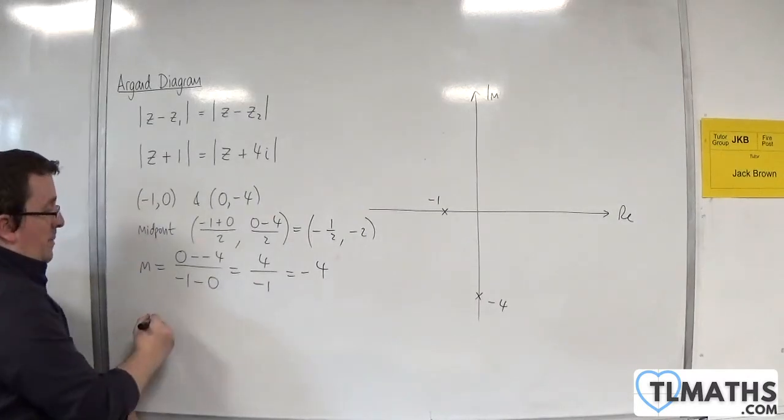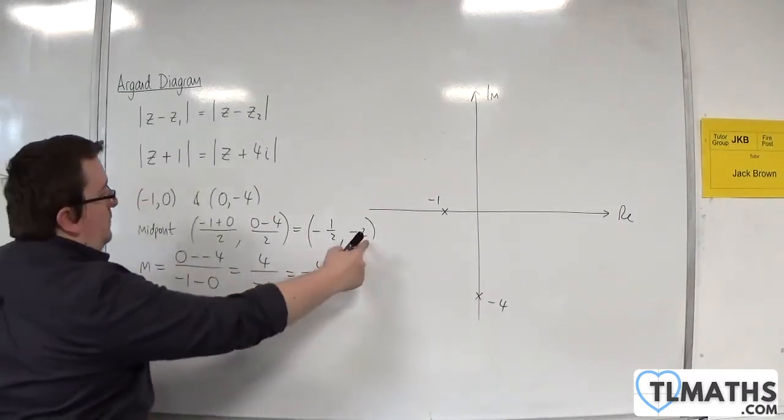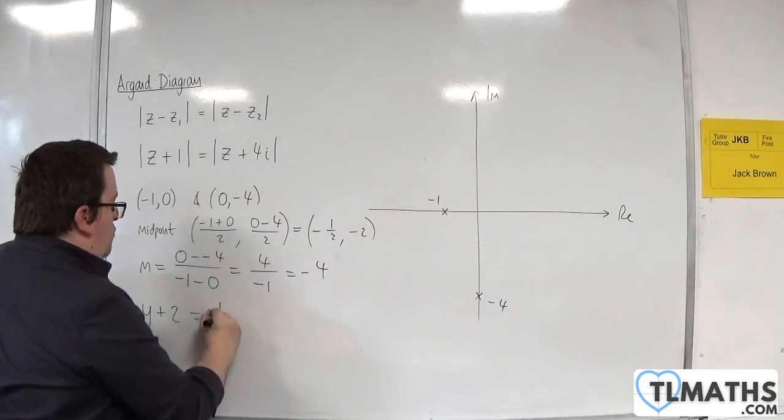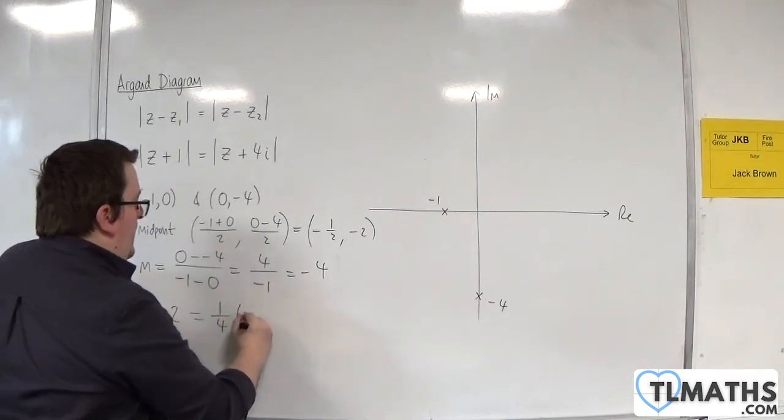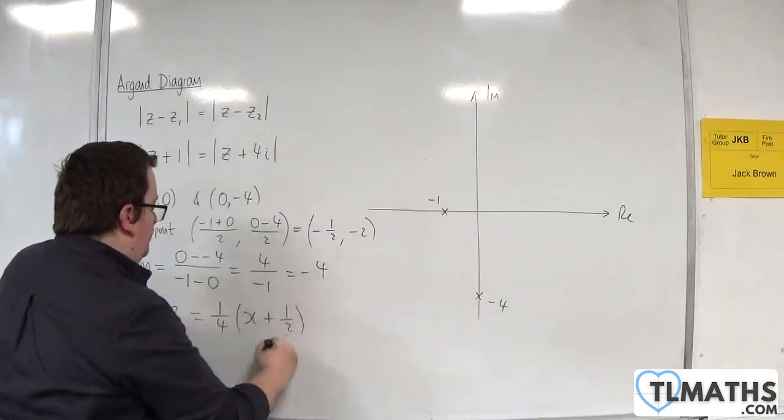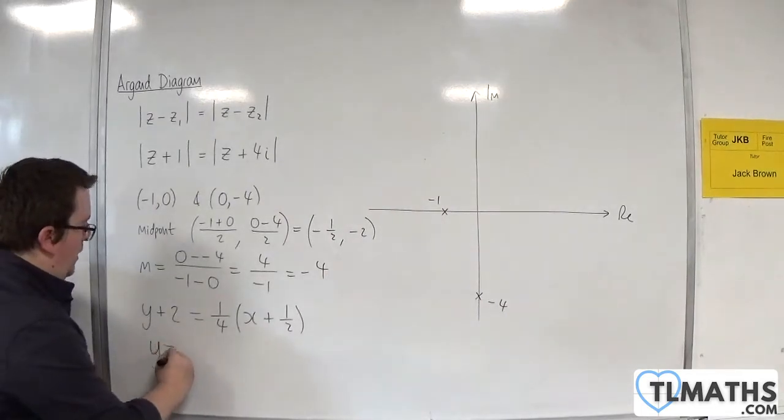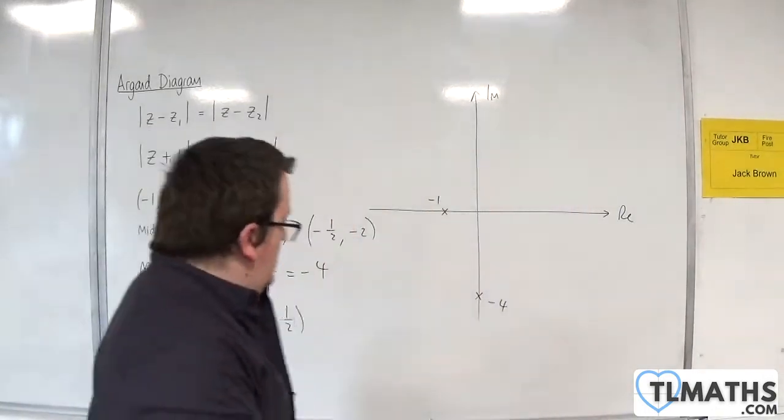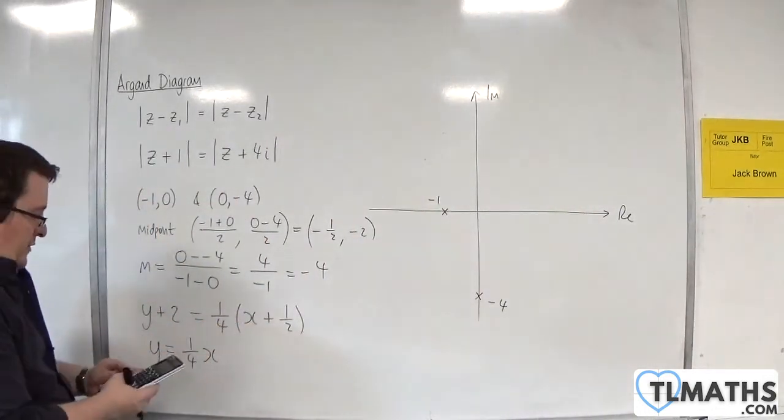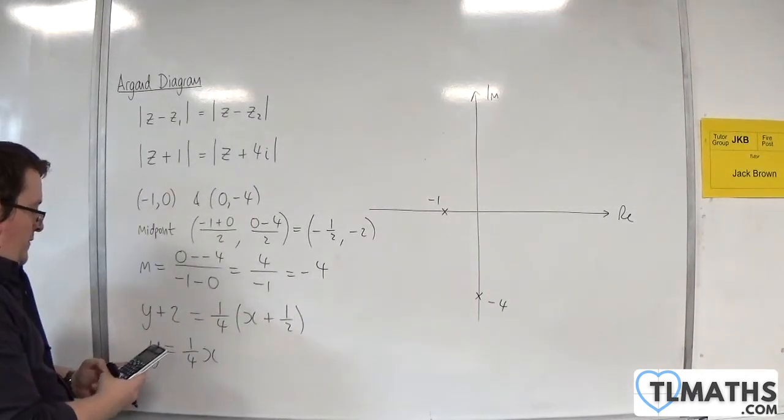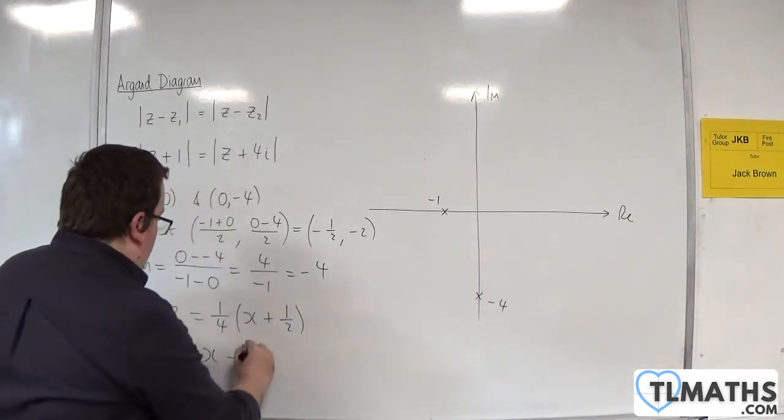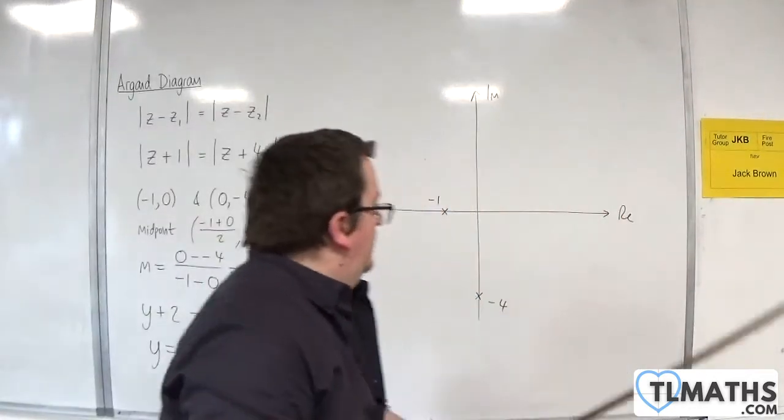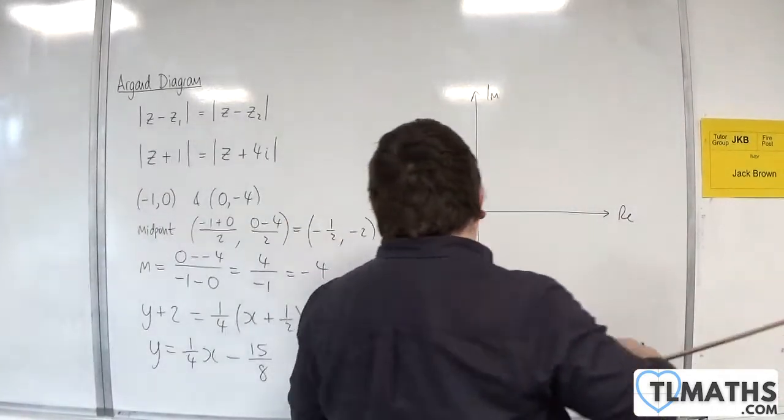So the equation of the perpendicular bisector would be y + 2 equals the negative reciprocal, so 1/4(x + 1/2). In y = mx + c form, y = 1/4x, and then 1/4 times 1/2 is 1/8, then I've got to take away 2, so -15/8.